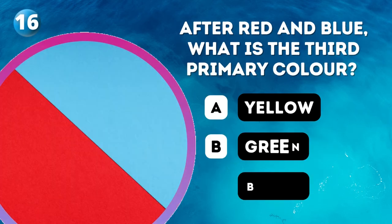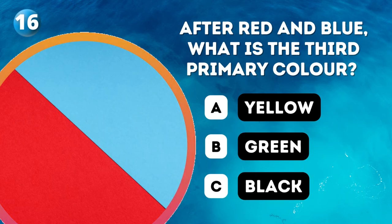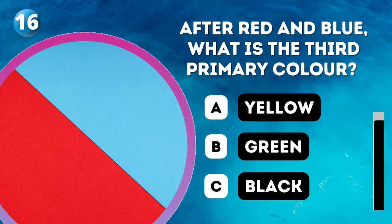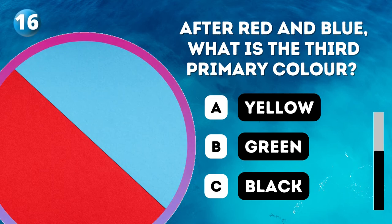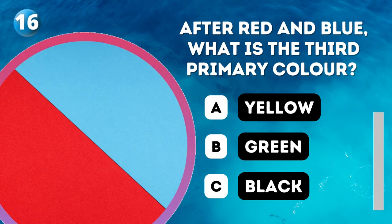Question 16. After red and blue, what is the third primary colour? A. Yellow, B. Green, C. Black. Answer: Yellow.